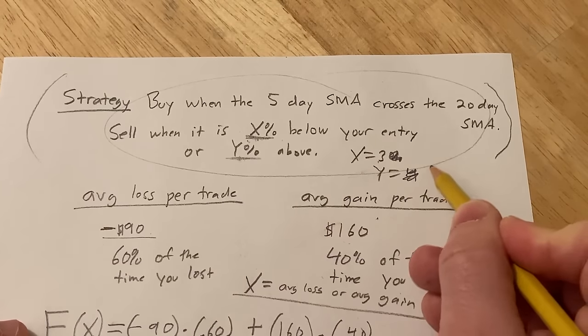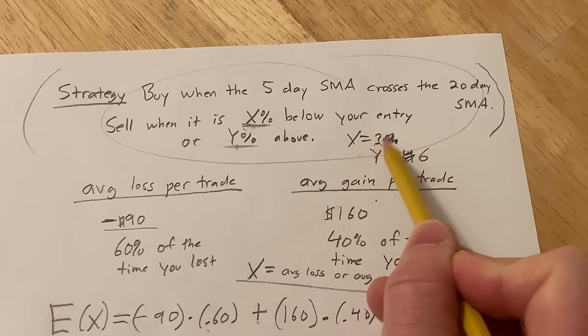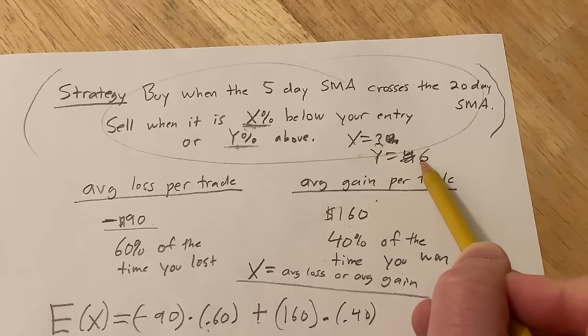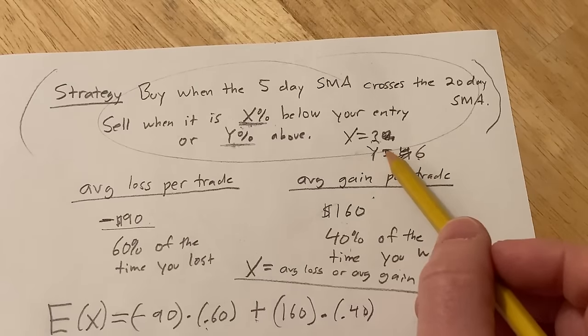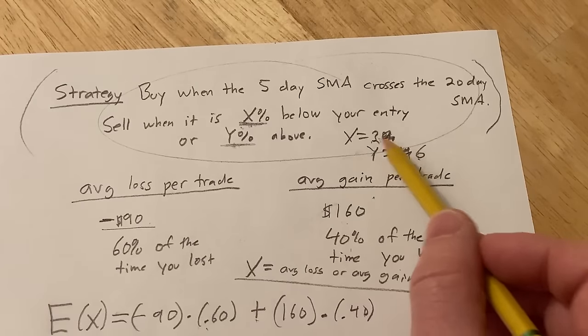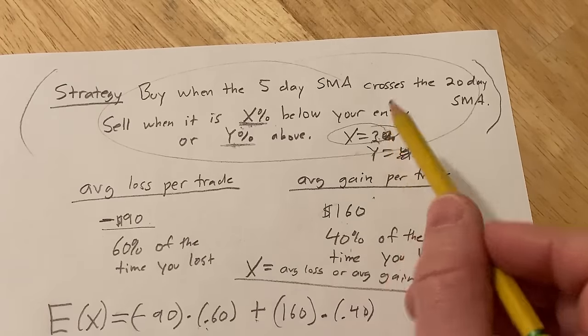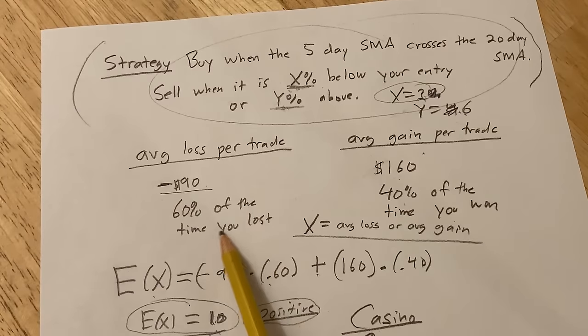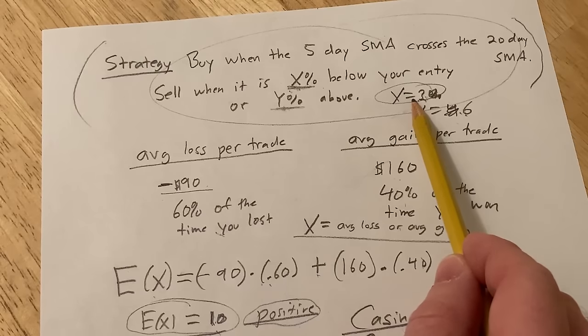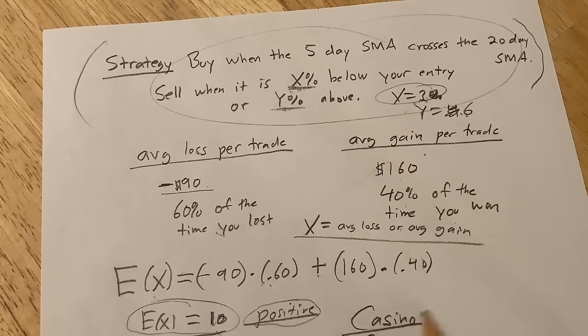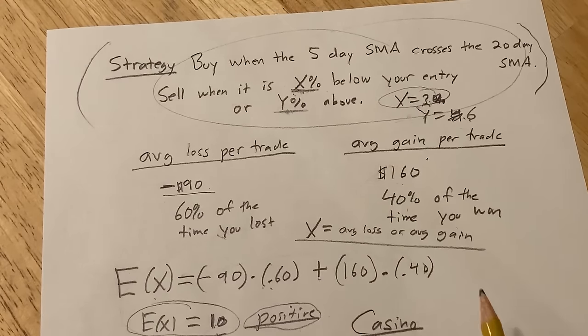A more extreme example might be 6. So you're willing to lose 3%, but you're not going to be happy until you gain 6. These are pretty big moves, so not everyone is going to go for something like this. But that's just an example, so that way, if you're wrong more often than you're right, because your losses are smaller, the expected value might still be positive in the long run.